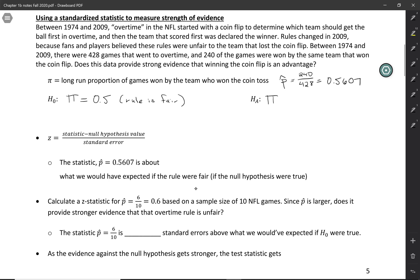Looking at the way the question is phrased—does it provide strong evidence that winning the coin flip is an advantage—our alternative hypothesis is going to be that π is greater than 0.5, which would mean that winning the coin flip is an advantage.